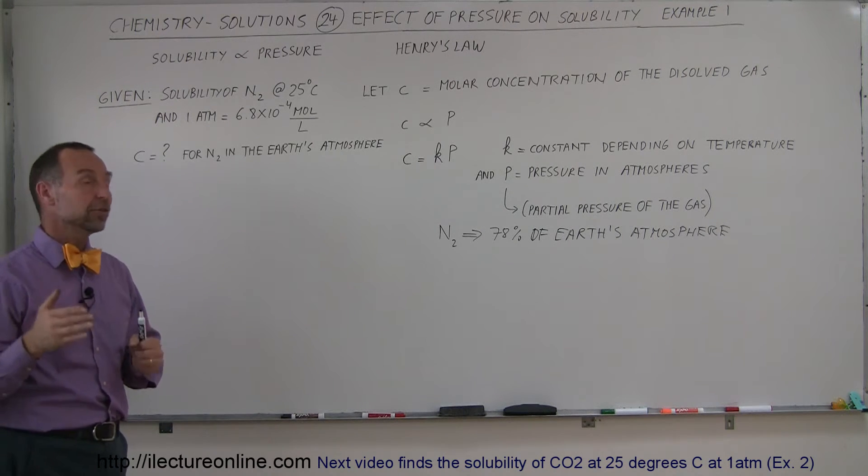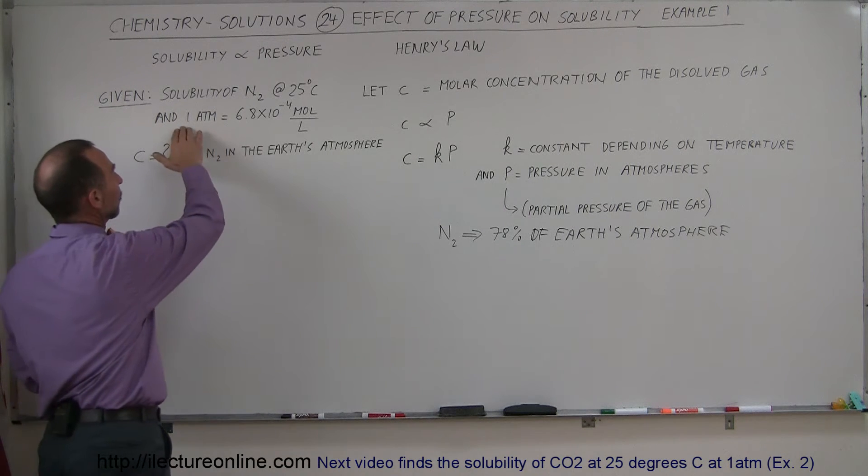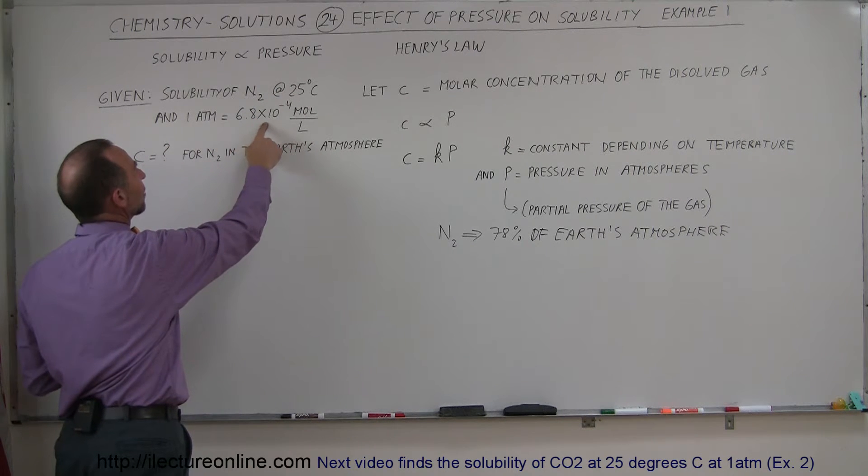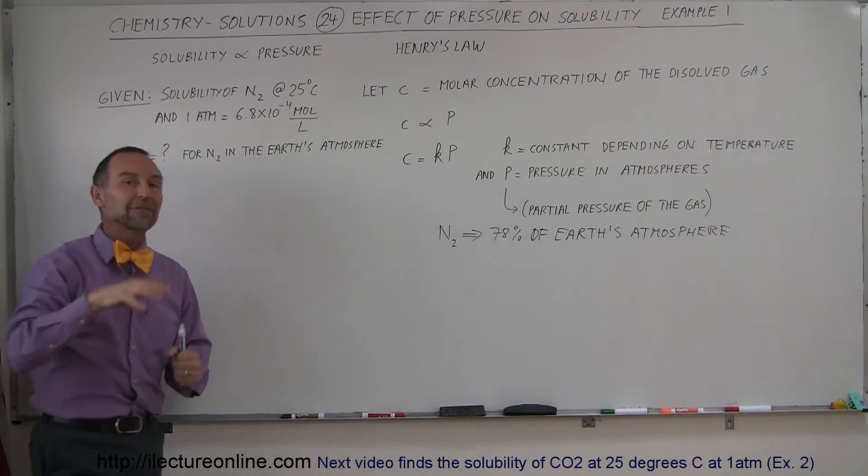That means under conditions of one atmosphere, if you have nitrogen gas at one atmosphere at a temperature of 25 degrees centigrade, 6.8 times 10 to the minus 4 moles will dissolve in every liter of solution.